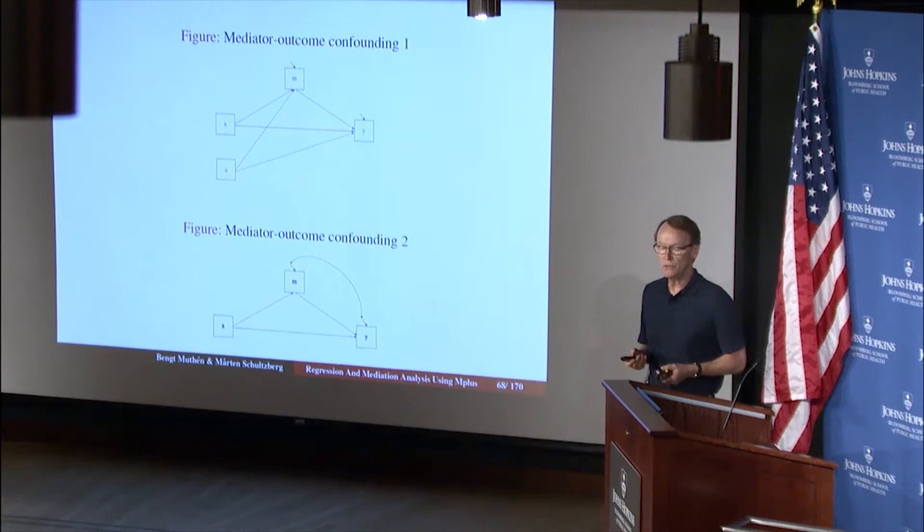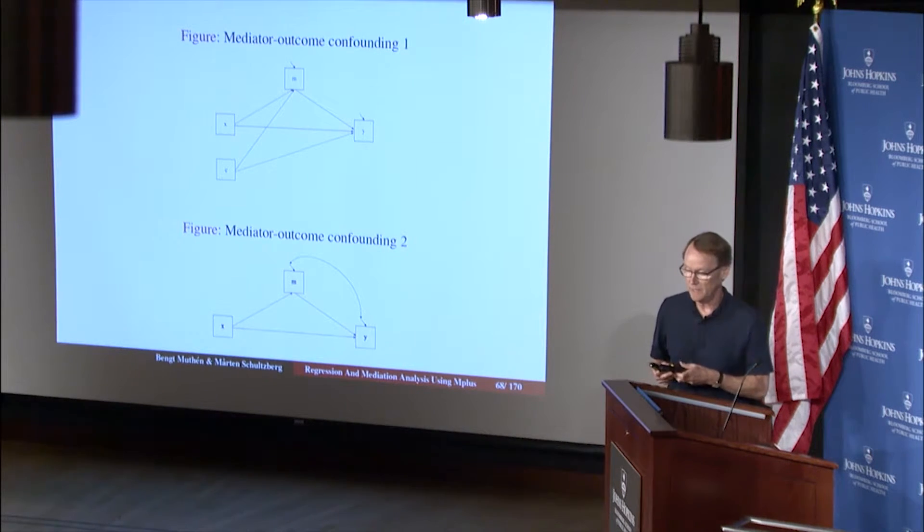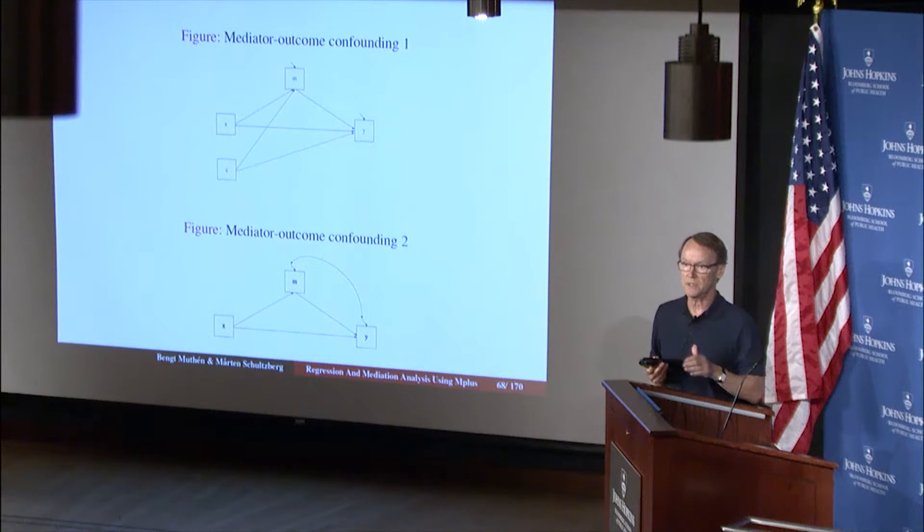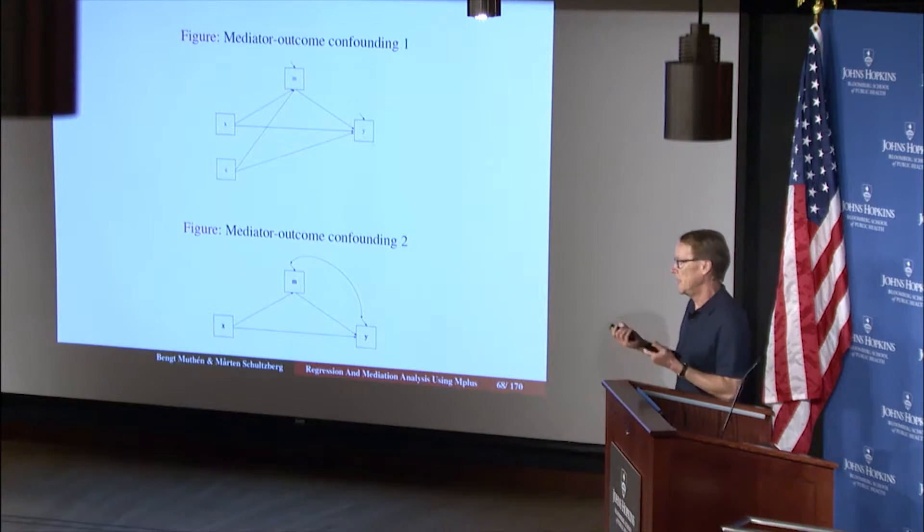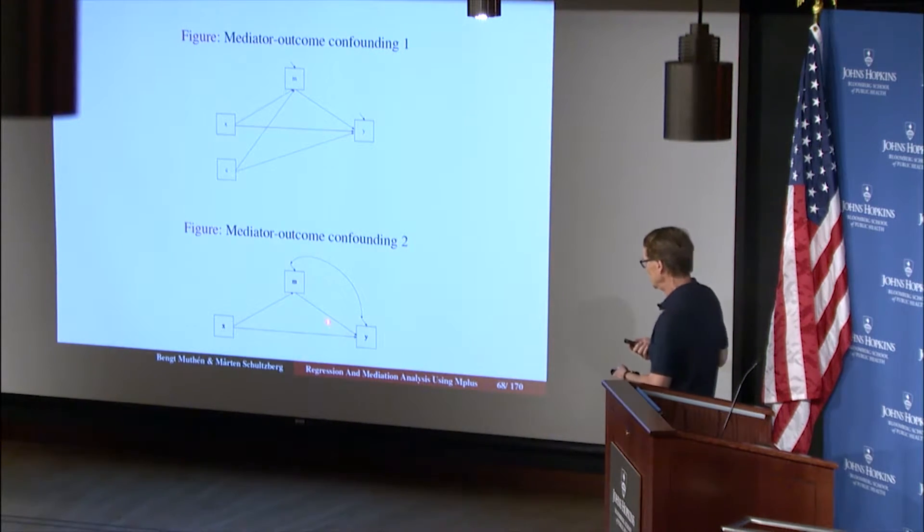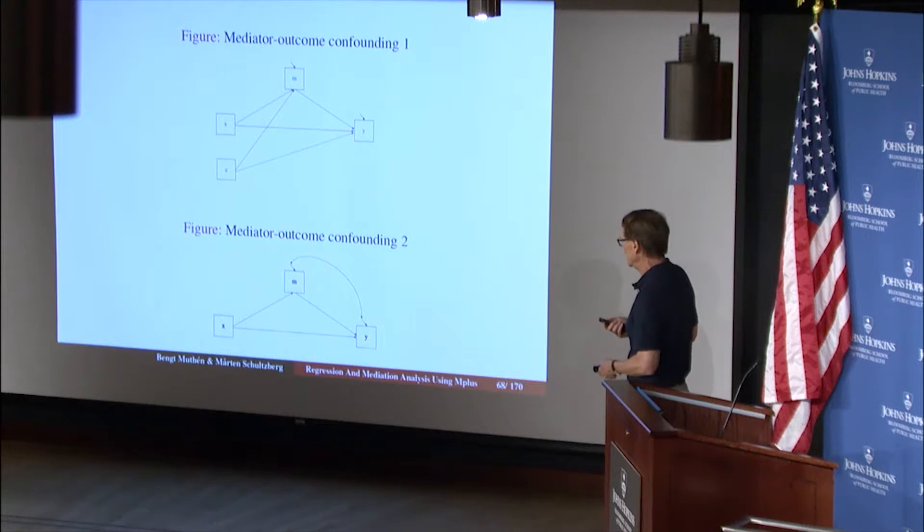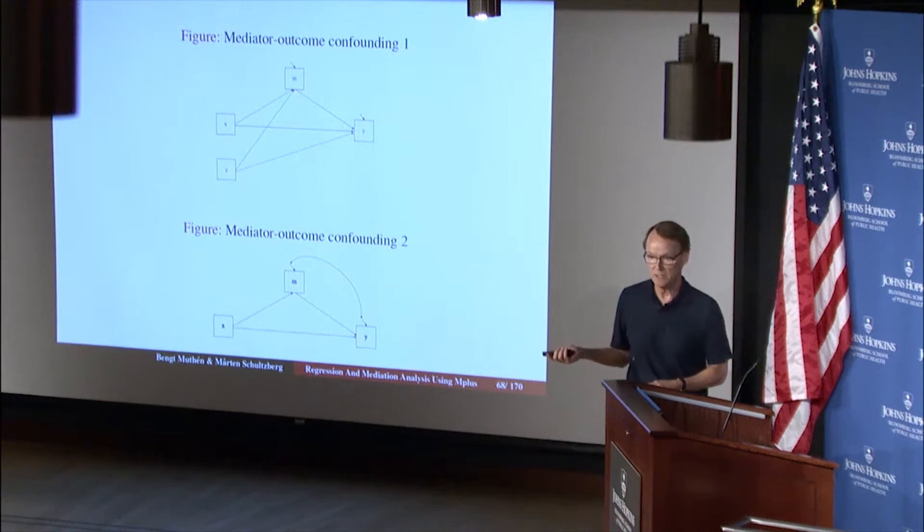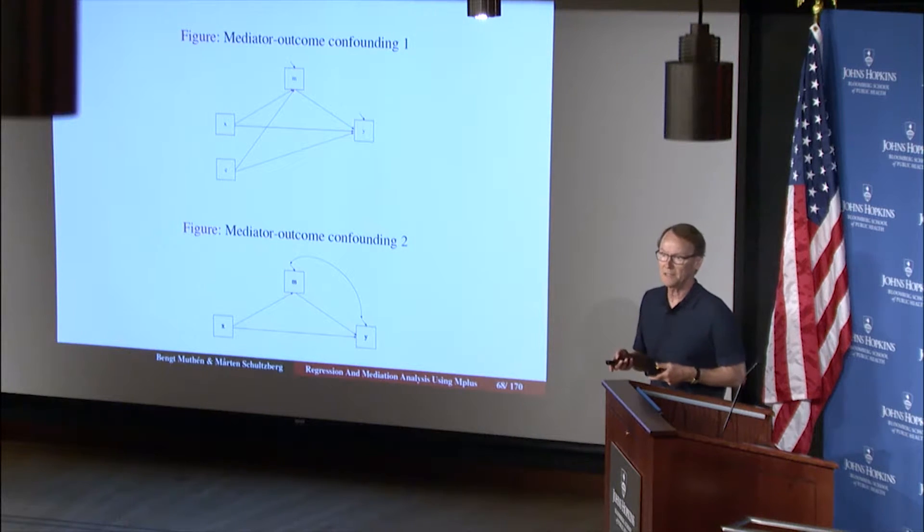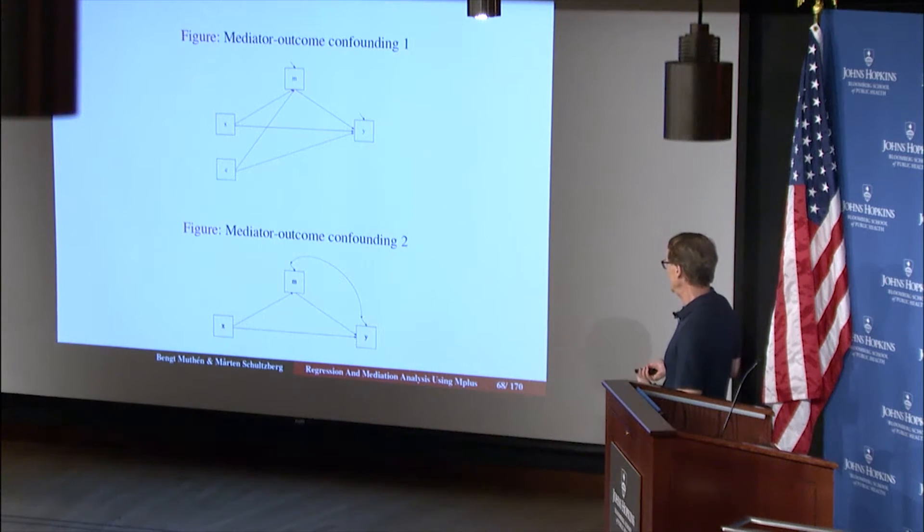So what statisticians do when they find that a model is non-identified is to do so-called sensitivity analysis. You can imagine that you can fix this correlation, even though you can't estimate it because it's not identified on top of this effect. You can fix it at different values and see, while you estimate this and c, and see how the effects are affected by that. That is what Imai suggested.